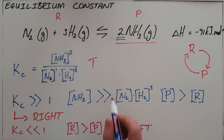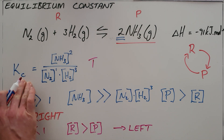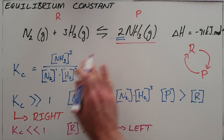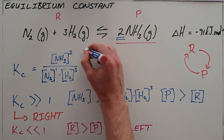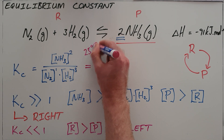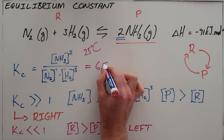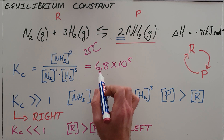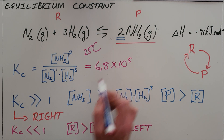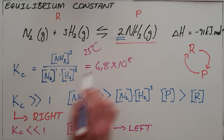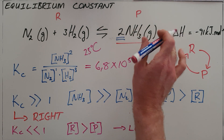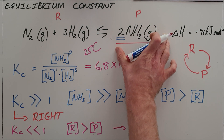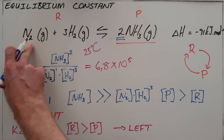The equilibrium constant is a constant for a specific temperature, so you would often see an equilibrium constant quoted at a specific temperature. As an example, the equilibrium constant for the Haber process at 25 degrees Celsius is 6.8 times 10 to the power of 5. From this we can clearly see that this is a number far bigger than 1, which means equilibrium lies far to the right, telling us that at equilibrium there is far more ammonia present in a container than there is nitrogen and hydrogen.